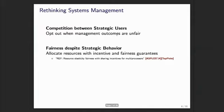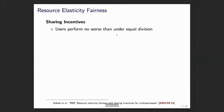We address this problem by looking at fairness despite strategic behavior. This work appeared in ASPLOS '14 where we allocate resources with incentive and fairness guarantees. Our approach is resource elasticity fairness. The first property is sharing incentives: users are guaranteed to perform no worse than if they got an equal share of the hardware. Alice would get half the machine and perform at least as well as if she had half — this is a prerequisite for participation in the shared system.